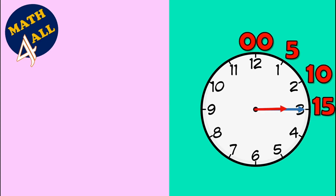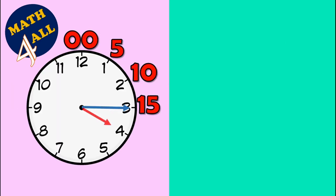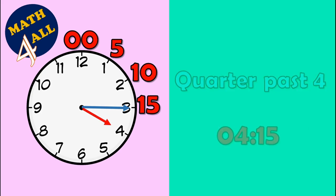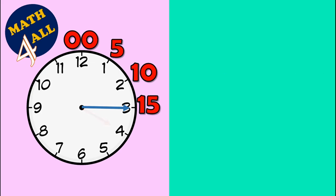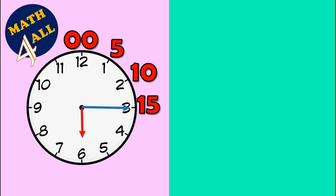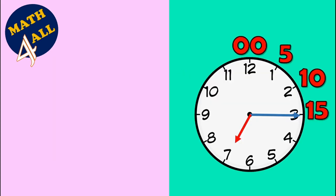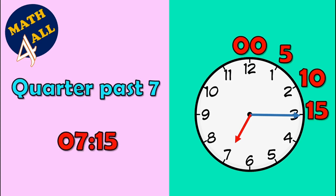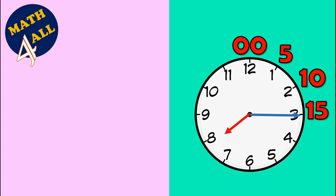What is the time? It's two fifteen, or quarter past two. What is the time? It's three fifteen, or quarter past three. What is the time? It's four fifteen, or quarter past four. What is the time? It's five fifteen, or quarter past five. What is the time? It's six fifteen, or quarter past six. Let's go faster — what is the time? It's seven fifteen, quarter past seven.